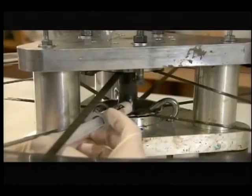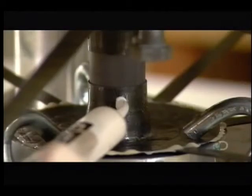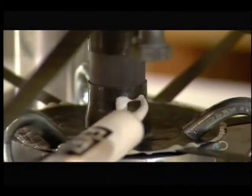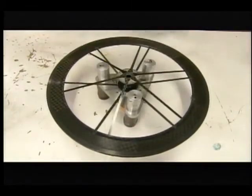Once he's satisfied with the tensioning, he applies resin adhesive through a hole in a hub flange. Two hours in an oven sets the tensioning and he removes the wheel from the fixture.